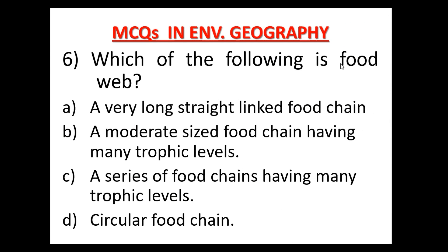Question 6: Which of the following is a food web (आहार जाल)? Option A: Very long straight linked food chain, Option B: A moderate sized food chain having many trophic levels, Option C: A series of food chains having many trophic levels, Option D: Circular food chain. Option C is the correct answer — a series of food chains having many trophic levels is known as a food web.